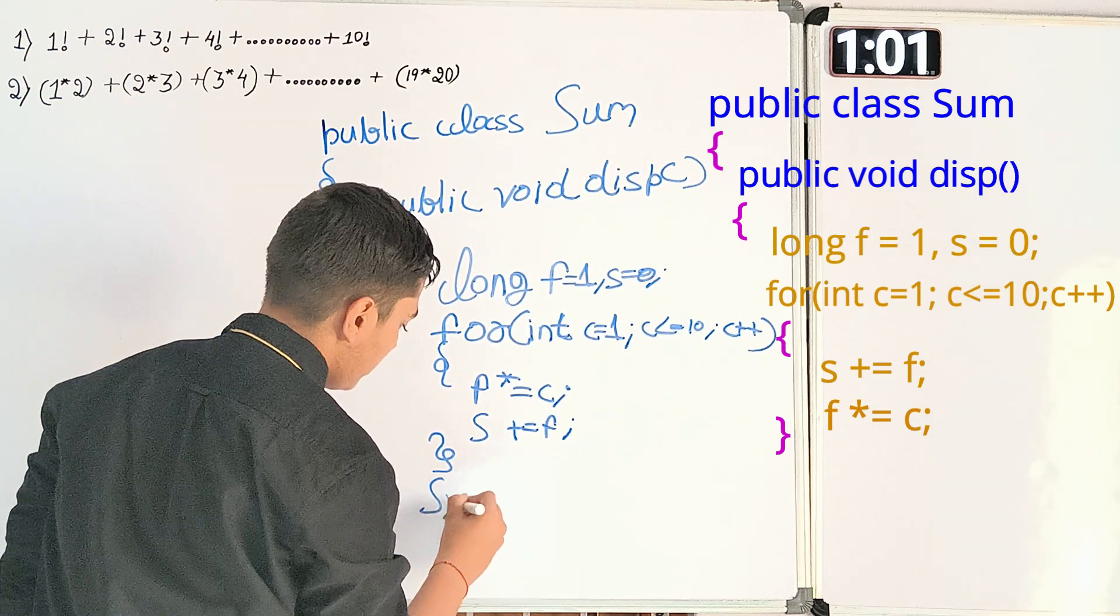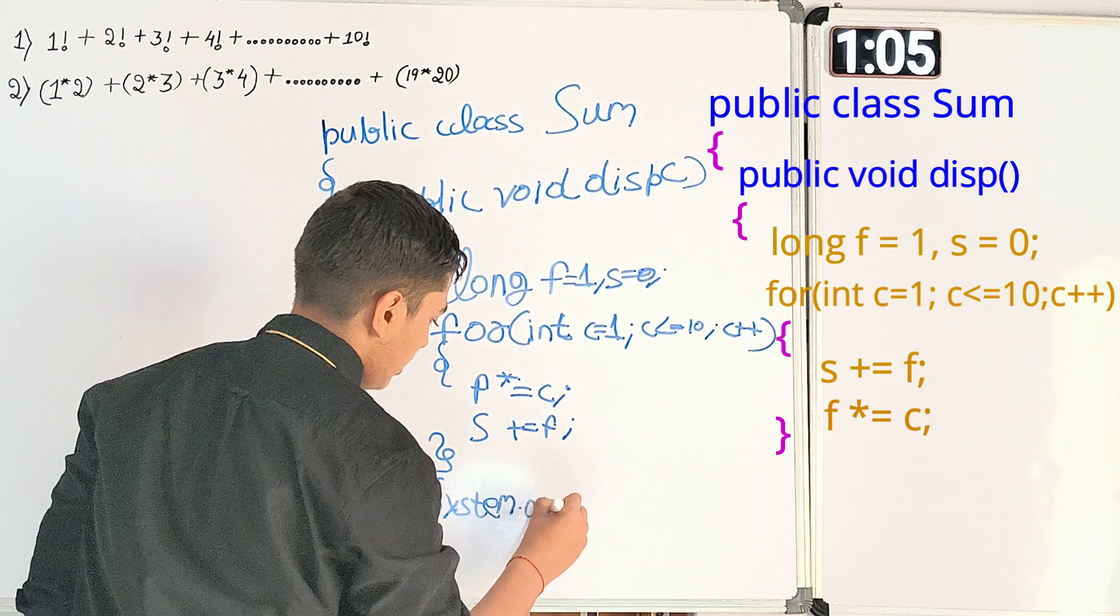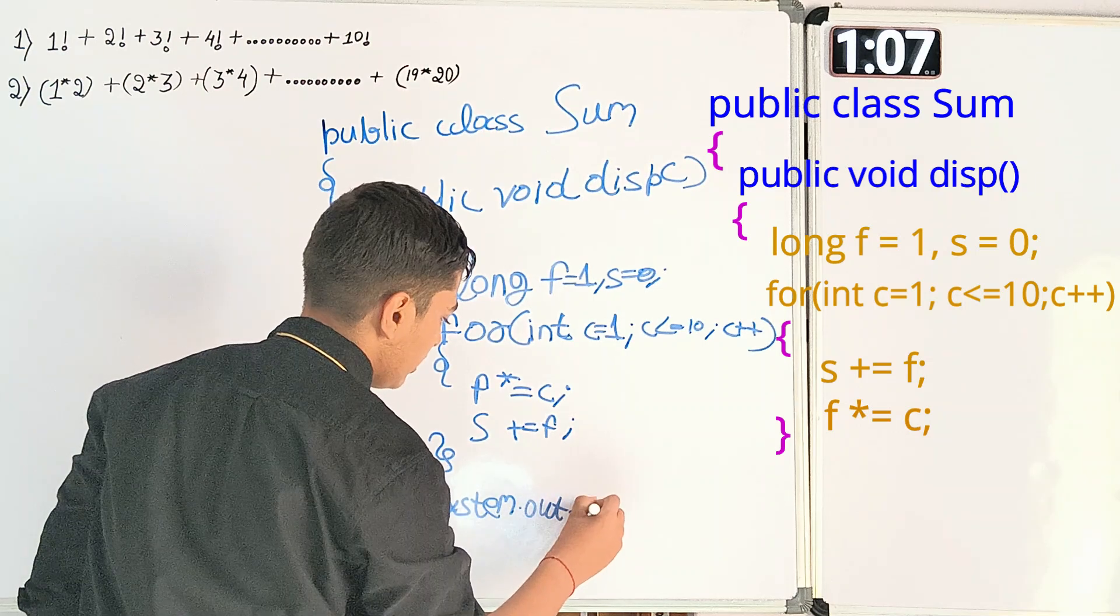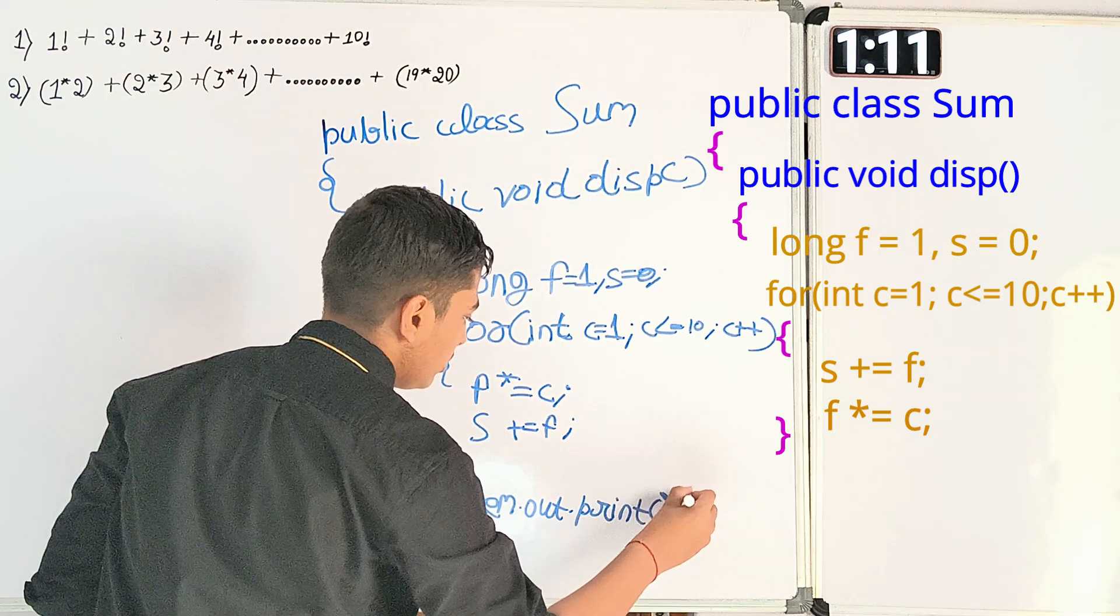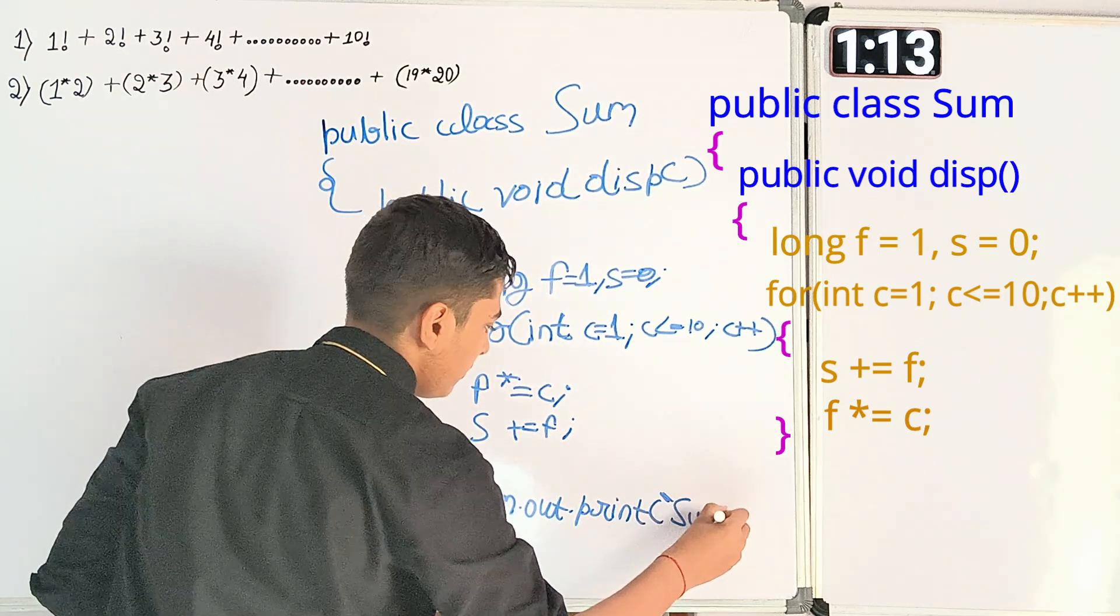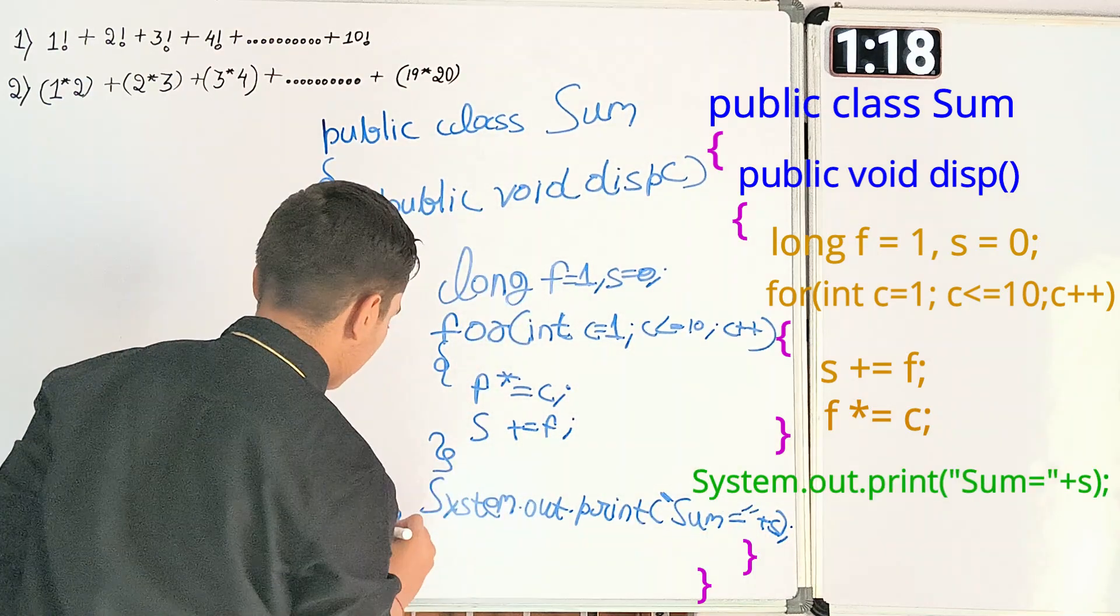Now system dot out dot print within double quotes sum is equal to plus s. Now closing curly brackets.